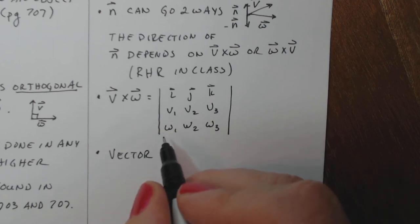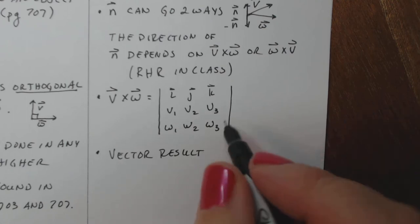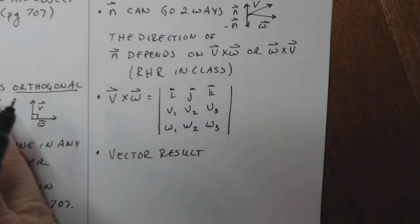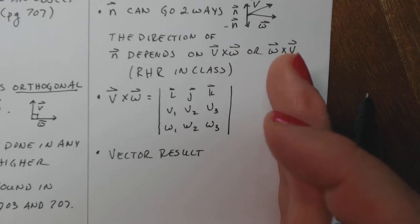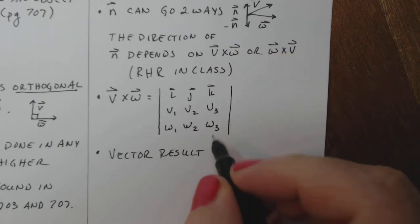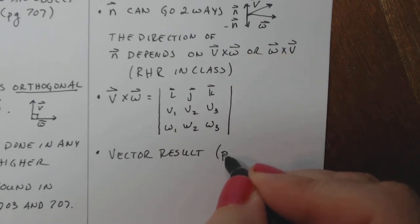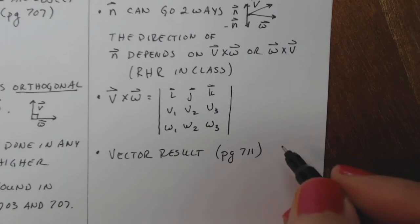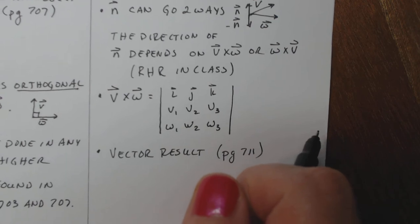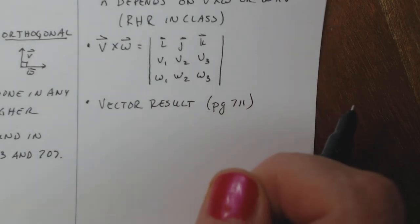But last but not least, cross product is always a vector result. Always. This is the biggest issue that students have between these two. One's a scalar dot product and one's a vector cross product. You just kind of have to do enough that you remember it. That's on page 711 if you want to read about it in your textbook.